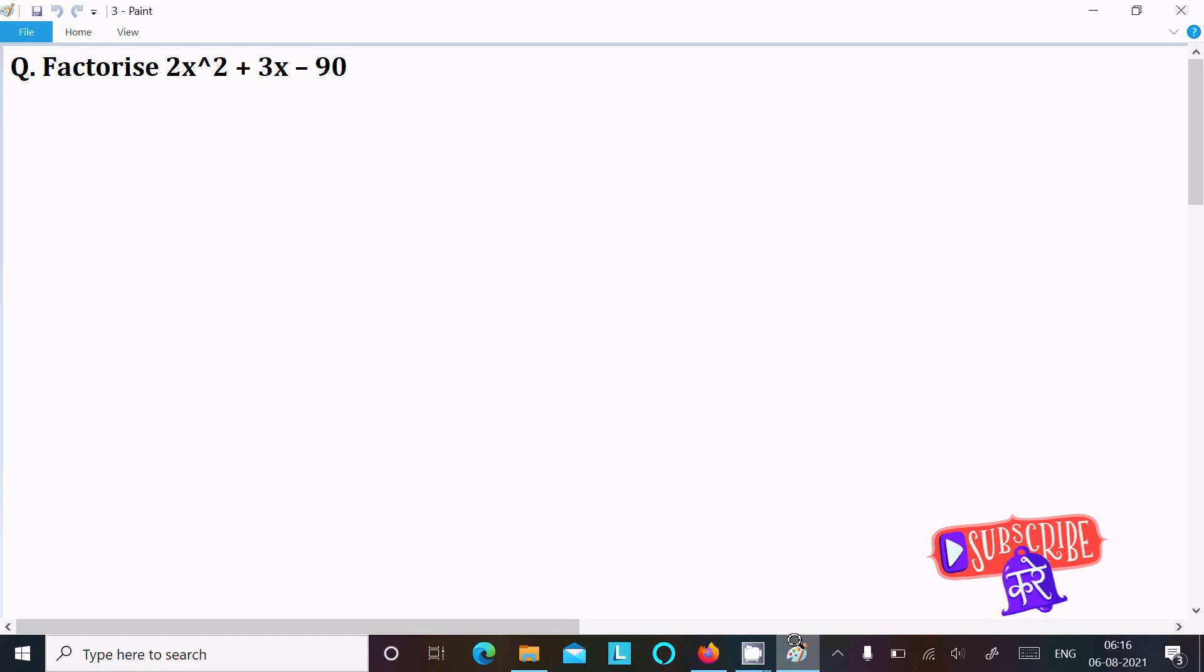In this video lecture, I am going to factorize 2x² + 3x - 90. Let's see the answer. First, writing the given expression: 2x²